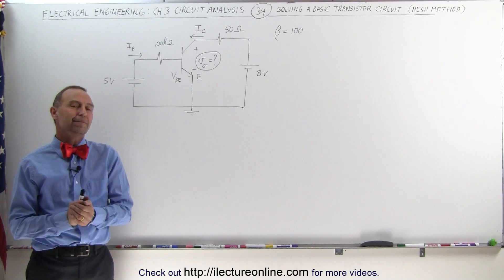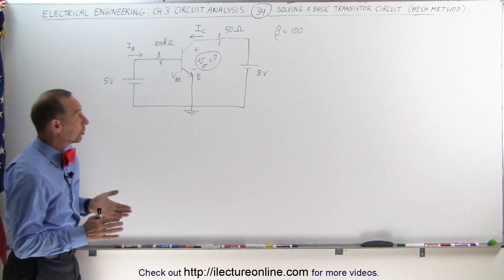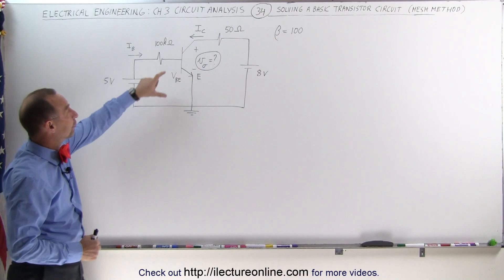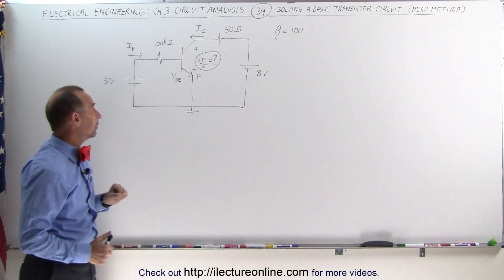Welcome to Electronline. Here we have a basic transistor circuit with an NPN transistor and what we're trying to do is determine the voltage from the collector to the emitter.